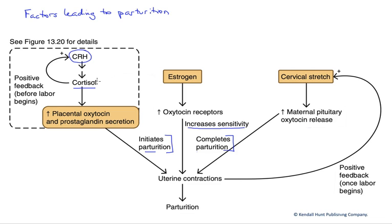In the fetus, this cortisol is going to help with maturation of some of the organ systems that are last to mature — the respiratory tract being a good one. But it's also going to act to increase placental oxytocin, a hormone that is contractile to the uterine wall, as well as contractile prostaglandins.